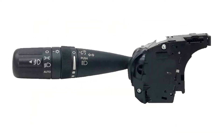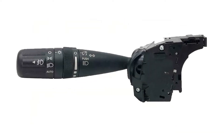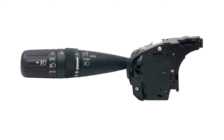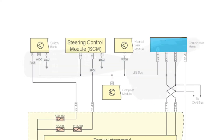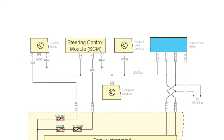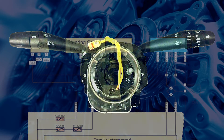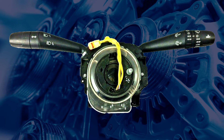The light switches in these vehicles are mounted on the steering column and are called multi-function switches. However, the OE wiring diagrams do not show these switches as they are considered to be integrated into the steering column control module mounted behind the steering wheel.